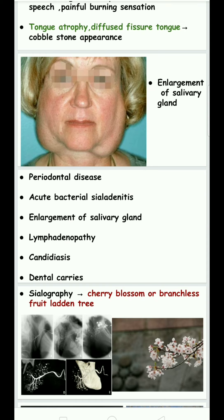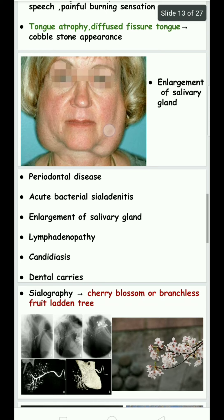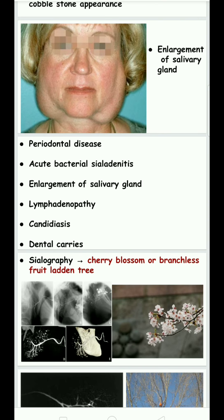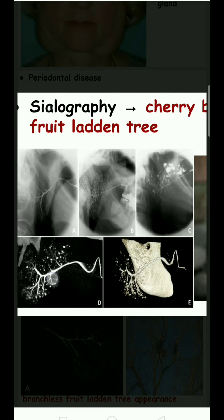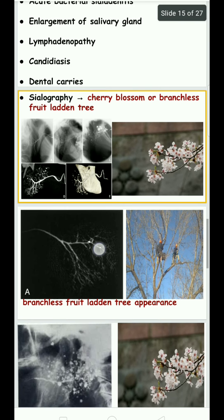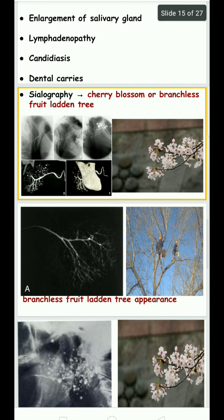Sjögren's syndrome also causes periodontal disease and acute bacterial sialadenitis, as xerostomia allows bacterial invasion into the salivary glands. Enlargement of salivary glands, lymphadenopathy, candidiasis, and dental caries are also seen. In sialography, a cherry blossom appearance and branchless fruit-laden tree appearance are present.